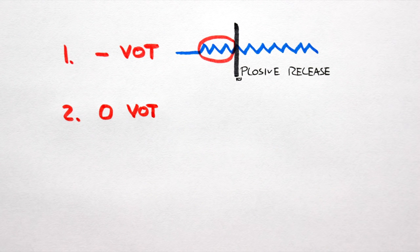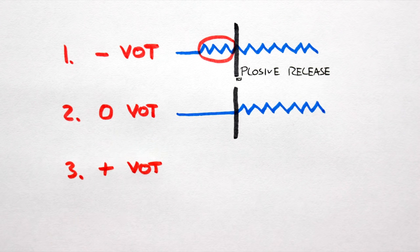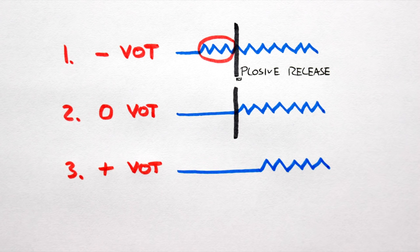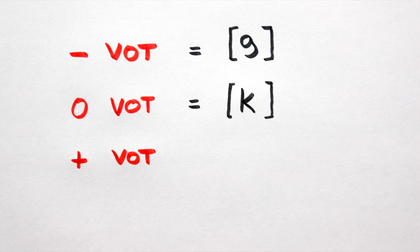Two, zero voice onset time, where the vocal cord vibration occurs with the plosive release. And three, positive voice onset time, where the vocal cord vibration begins after the plosive release. Examples would be gaa, caa, and caa.